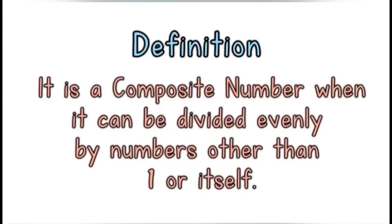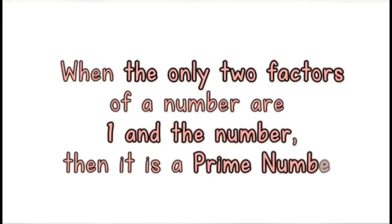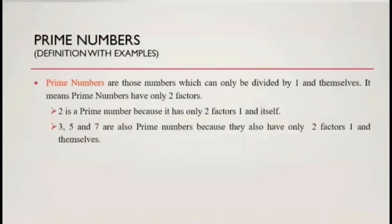It is a composite number when it can be divided evenly by numbers other than one or itself. When the only two factors of a number are one and the number itself, then it is a prime number. I will tell you prime and composite numbers in more detail.